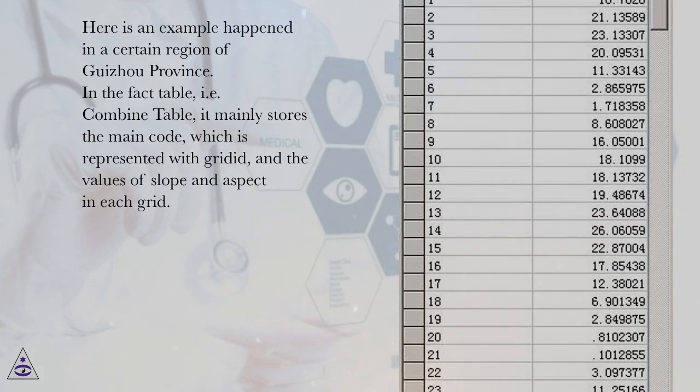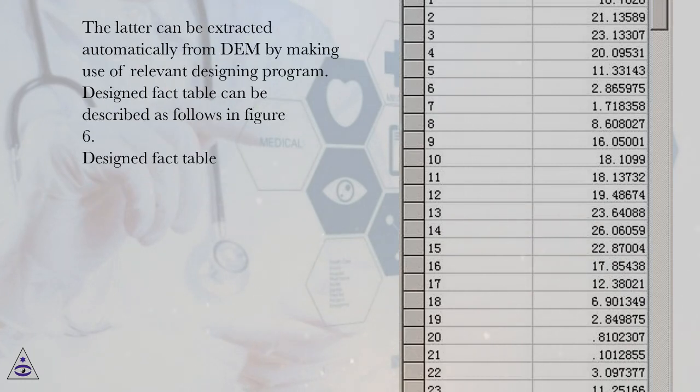In the fact table, i.e. combined table, it mainly stores the main code, which is represented with grid ID, and the values of slope and aspect in each grid. The latter can be extracted automatically from DEM by making use of relevant designing program. Designed fact table can be described as follows in figure 6. Designed fact table.